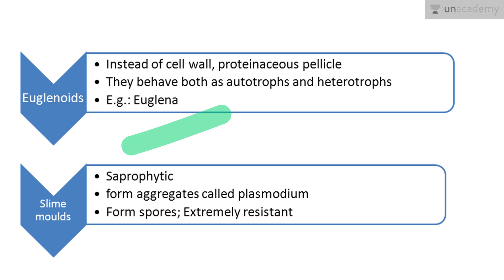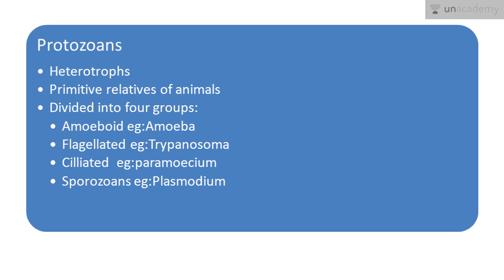The most important feature of slime molds is that they form aggregates called plasmodium and produce spores that are extremely resistant and useful in harsh conditions. Next are protozoans, which are heterotrophs considered primitive relatives of animals. They are divided into four groups: amoeboid, flagellated, ciliated, and sporozoans.